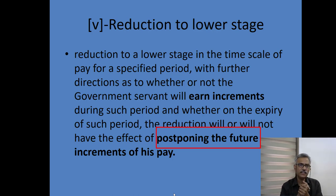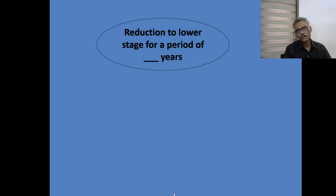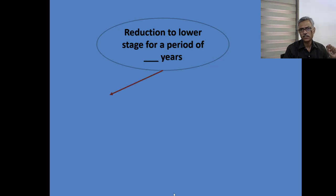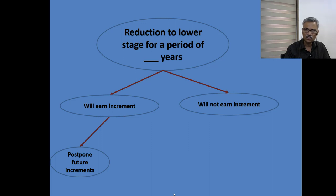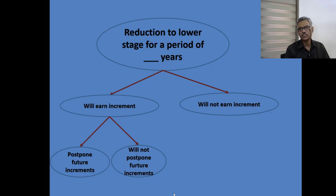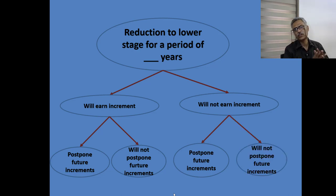This penalty can take four different variations. For example, reduction to a lower stage for a period of two years — the discipline authority must state in the penalty order whether during this period the government servant will earn increment or will not earn increment. If he earns increment, the authority has two further choices: it will postpone future increments, or it will not postpone future increments. Similarly if he will not earn increment, it may or may not postpone future increments. So the penalty can take four different variations.